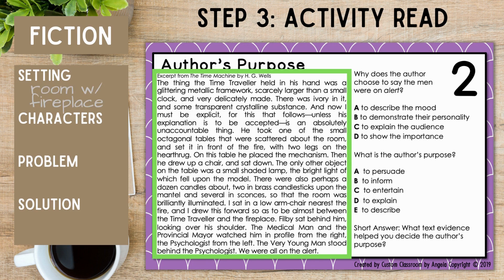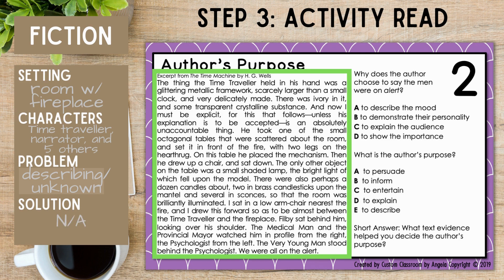The setting is described throughout the whole passage as a brightly lit room with a fireplace. Characters are the time traveler, the narrator, and five other characters all huddled around. The problem is harder to identify because most of this passage is very descriptive, but there's a feeling of the unknown about what's going to happen with this mechanism or machine on the table — a little bit of suspense. The solution hasn't happened yet because the passage leaves you with anticipation of what's to happen next.